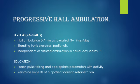Progressive hall ambulation: 2.5 to 3 METs. All ambulation, 5 to 7 minutes, as tolerated, 3 to 7 times per day. Standing front exercises are optional. Independent or assisted ambulation in room or hall as advised by physiotherapists. At 3.5 METs, teach pulse taking and appropriate parameters with activity, and reinforce the benefits of outpatient cardiac rehabilitation.